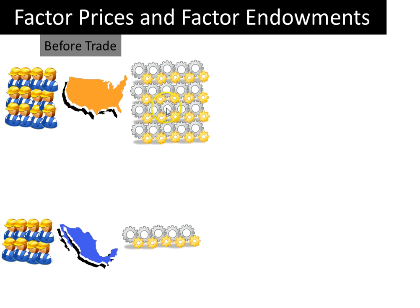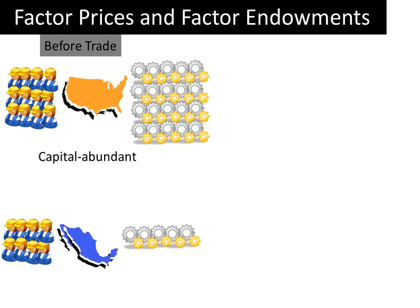Now let's say that these images represent the total volume of labor and capital in the two countries. Based on the size of these images, where is capital relatively abundant and where is labor relatively abundant? It seems that there is more capital per worker in the United States than there is capital per worker in Mexico. So by definition, the United States is a capital-abundant country. Similarly, there is more labor per unit of capital in Mexico than in the United States, and so by definition, Mexico is the labor-abundant country.